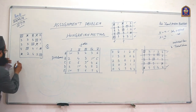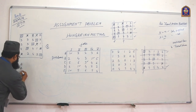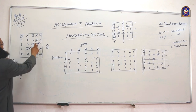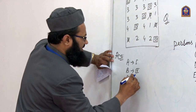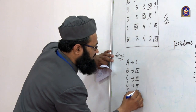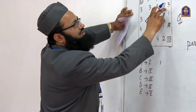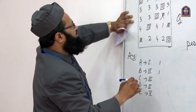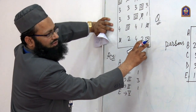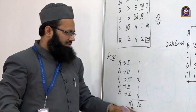Our solution is optimal. The assignment is: person A assigned to job 1, B assigned to job 4, C assigned to job 3, D assigned to job 2, and E assigned to job 5. The costs from the original matrix: A to job 1 costs 1, B to job 4 costs 1, C to job 3 costs 3, D to job 2 costs 1, and E to job 5 costs 4. So the total minimum cost is 10 rupees. This is our optimal assignment.